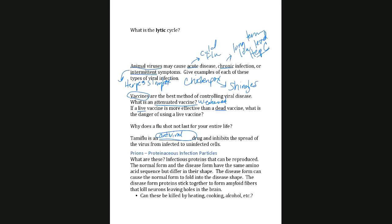A dead vaccine is safer because it cannot become infectious, whereas a live attenuated vaccine is still live — just weakened — but is much more effective. The danger of a live vaccine is that it has the potential for a back mutation — mutating back to its more virulent, infectious form. There was a case in Nigeria around 2007 where they were vaccinating for polio and actually had a polio outbreak because of this back mutation in the vaccine.